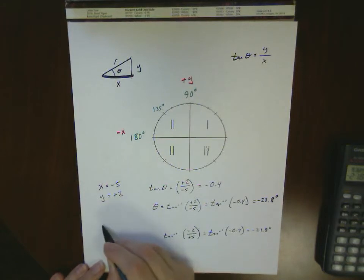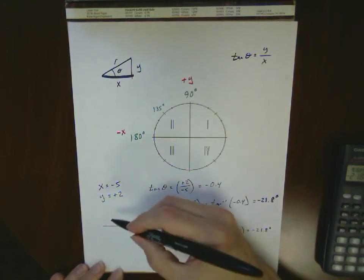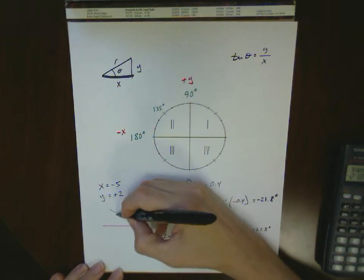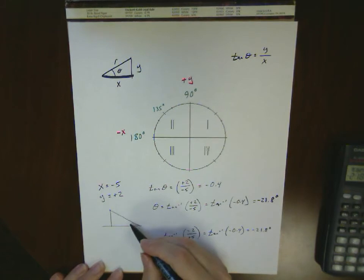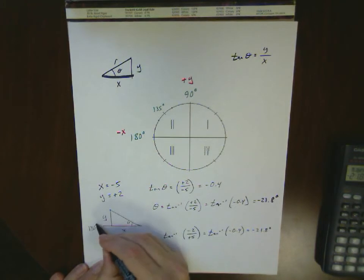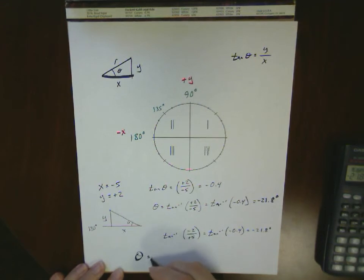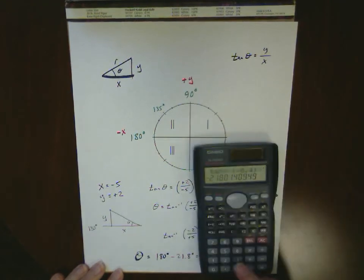Let's think of it this way. When I have a quadrant 2 triangle, I really have something like this. What my calculator is doing is saying this angle is -21.8 from the 180 degree reference line. So my angle should properly be written as 180 degrees minus 21.8 degrees. And that gives me...